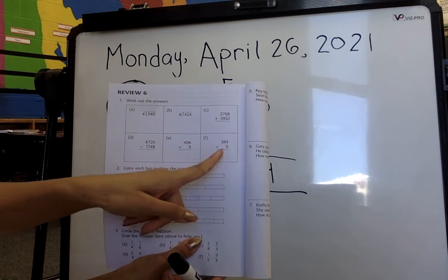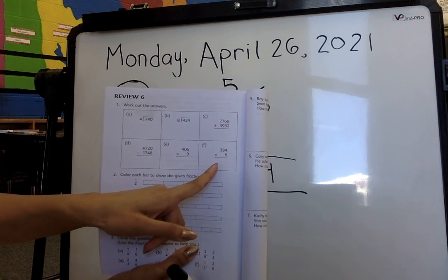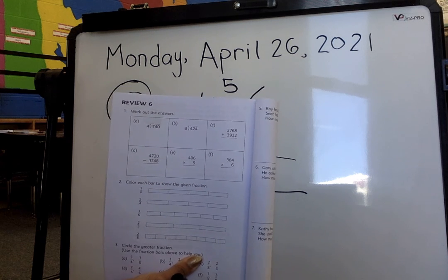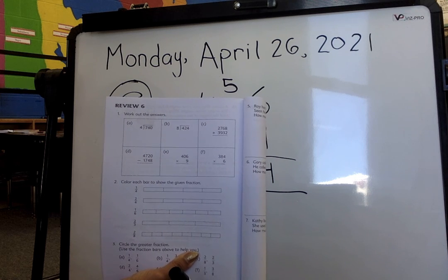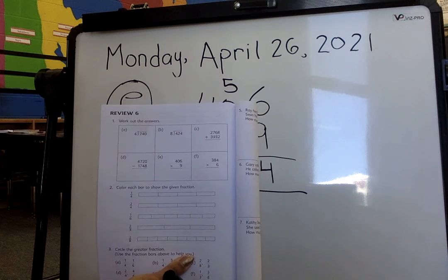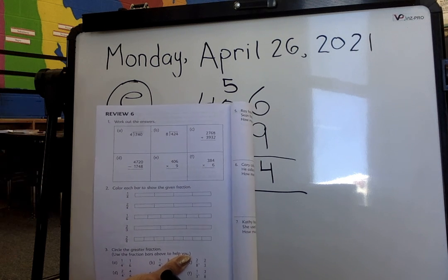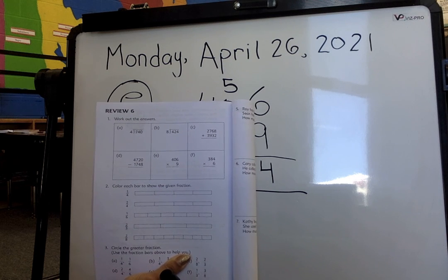Now you need to go ahead and you need to multiply question F on your own. You can use your multiplication sheet if you need to, but I would challenge you to do it without looking. And I wish you all the best, and I hope you're successful in finishing the rest of your questions. And only and only when you're done, then you can go ahead and look at your answer key. And I will see you next time.